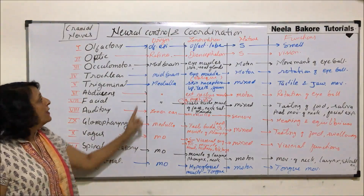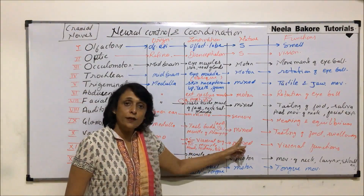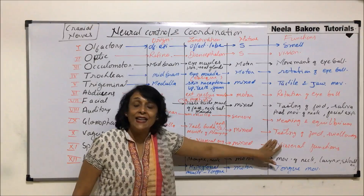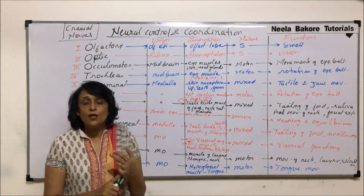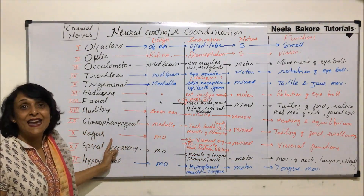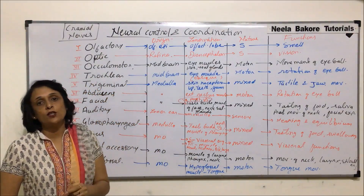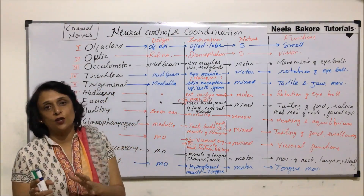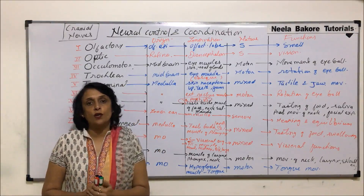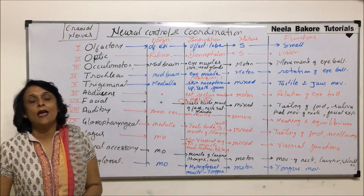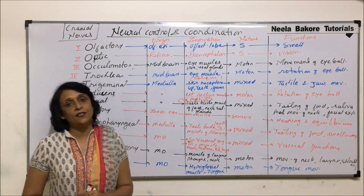So this is a complete brief outline of all 12 cranial nerves — their origin, their innervation, their nature, and their functions. When we talk of cranial nerves, not only the numbers are important; the names and all other details are also important, because questions often ask us to pick out all the sensory nerves or identify which ones are motor. This table helps us understand and remember all important aspects of these 12 cranial nerves.